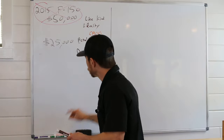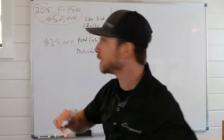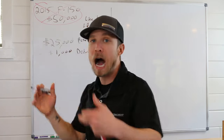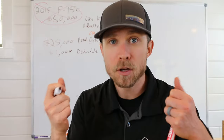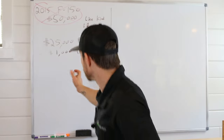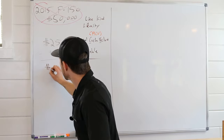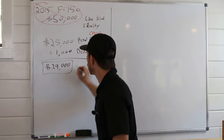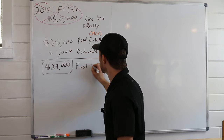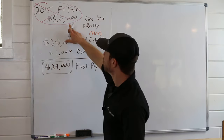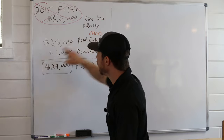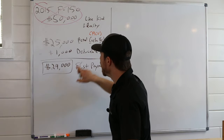Now, the deductible — for easy math, let's say it's $1,000. The deductible is the contractual agreement between the homeowner and the insurance company, and it's the same whether it's a $2,000 loss or a $2 million loss. Some new deductibles are a percentage of the claim or home value, but generally speaking, it's a fixed cost. So we subtract the deductible from the ACV: the homeowner receives a check for $24,000 — that's the first payment.